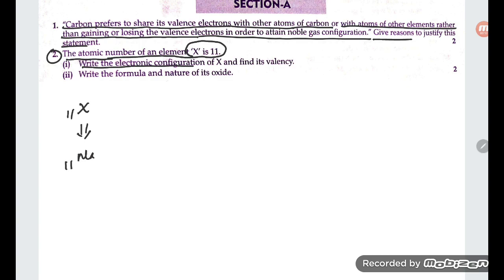Write the electronic configuration of X and find its valency. So its configuration is 2, 8, 1. And since one valence electron, the valency is going to be 1. So you can write the formula and its nature of oxide.